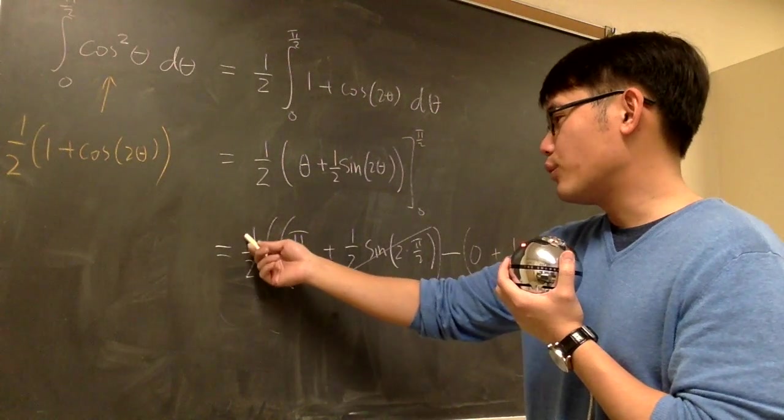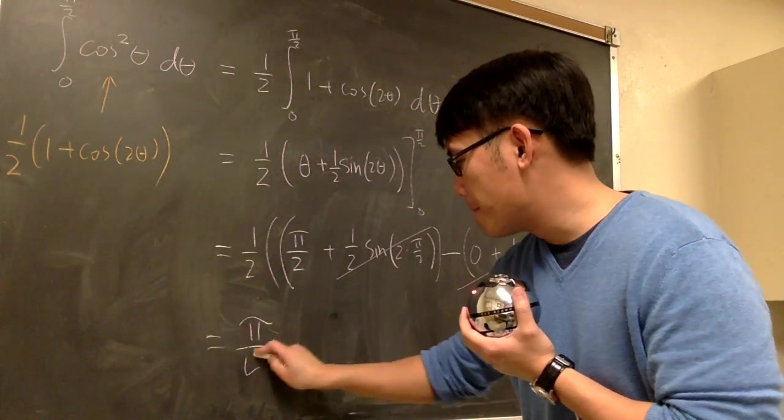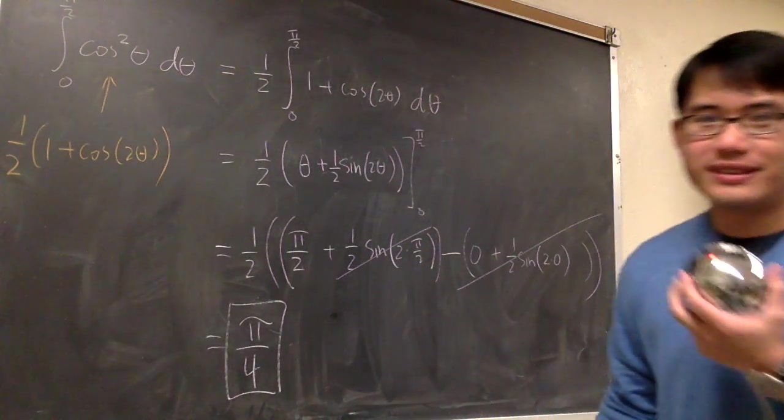And guess what? We only have 1 half times pi over 2. Which, of course, we end up with pi over 4 for the answer. That's it.